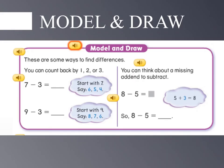Now we're going to model and draw, and look at ways to find differences. So get your paper and your pencil ready. One way that you can find a difference, or subtract, is to count back by 1, 2, or 3. Look at the subtraction fact 7 minus 3. For this, we're going to start with 7, and say 6, 5, 4. And 4 is the answer.